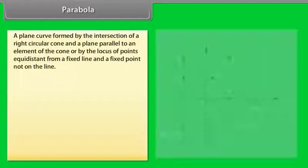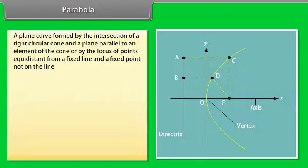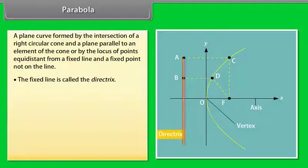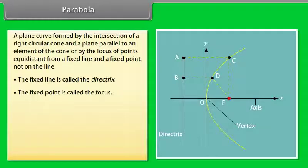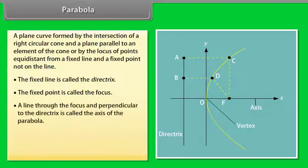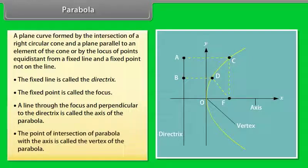Parabola. A plane curve formed by the intersection of a right circular cone and a plane parallel to an element of the cone, or by the locus of points equidistant from a fixed line and a fixed point not on the line. The fixed line is called the directrix. The fixed point is called the focus. A line through the focus and perpendicular to the directrix is called the axis of the parabola. The point of intersection of the parabola with the axis is called the vertex of the parabola.